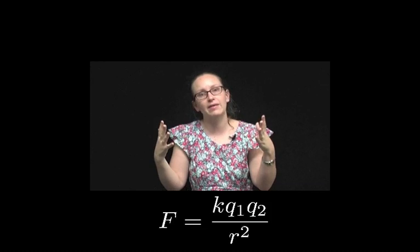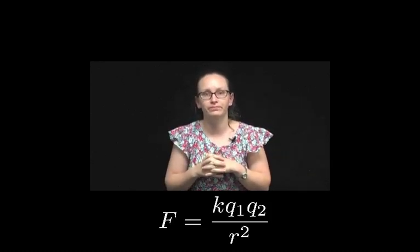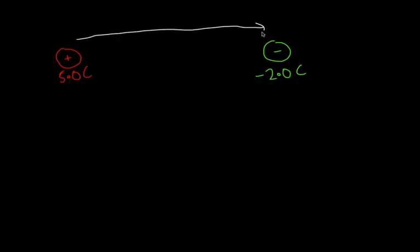What we're going to look at now is an example which we can solve with Coulomb's Law. Let's do a quantitative example of how we can use Coulomb's Law to solve problems. Imagine that we had a positive charge of 5.0 coulombs, and a small distance away we had a negative charge of 2.0 coulombs. The distance between these charges is given by 22 centimeters. And we're asked what force is felt by the positive charge.